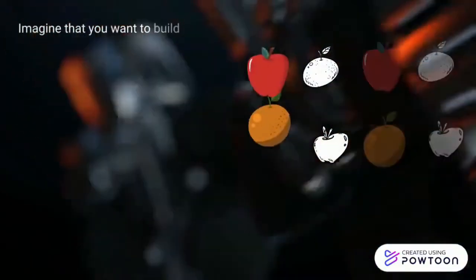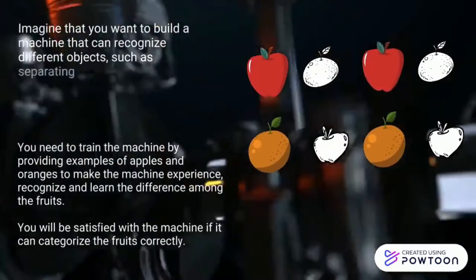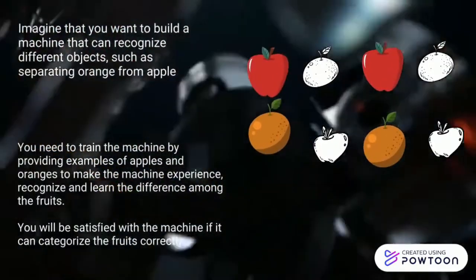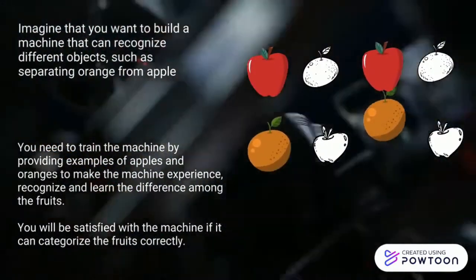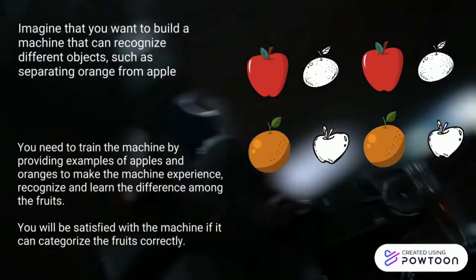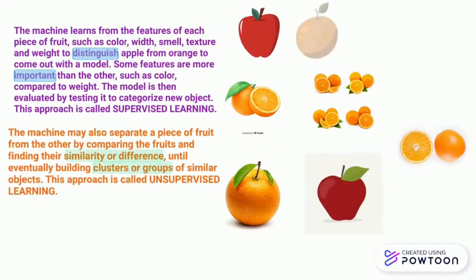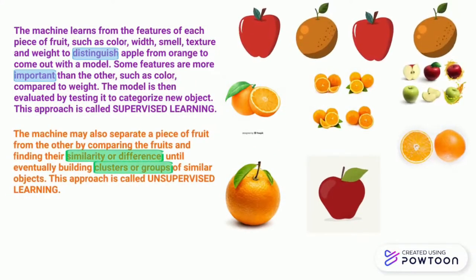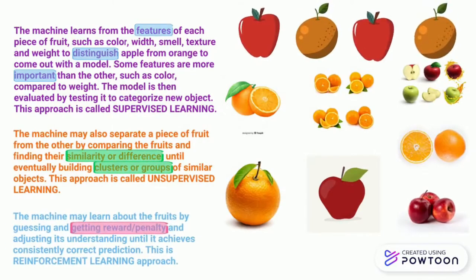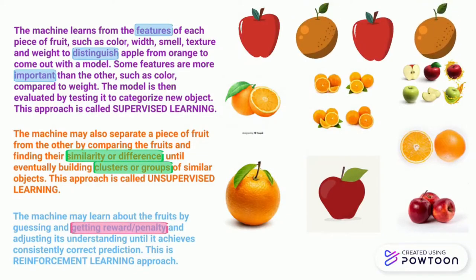Imagine that you want to build a machine that can recognize apples from oranges. You need to provide examples so the machine will be able to learn the similarity and difference among the fruits. Machine learning finds the patterns across the images of each fruit type to find the similarities and differences, and may get a reward based on the type of machine learning algorithm that you choose.